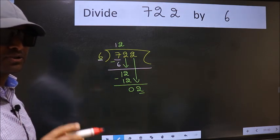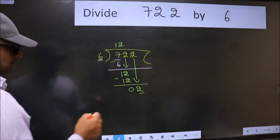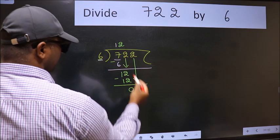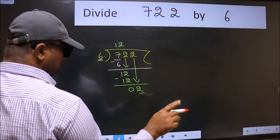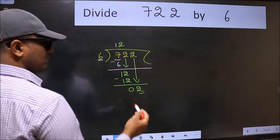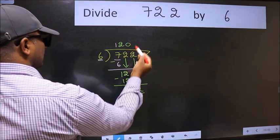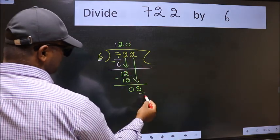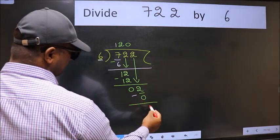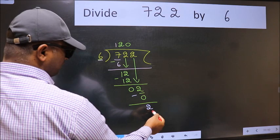Instead of that, what you should think of doing is, which number should we take here. If I take 1, we will get 6. But 6 is larger than 2. So what we do is, we take 0. So 6 into 0, 0. Now we subtract. We get 2.